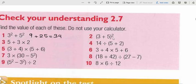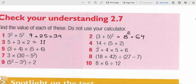Question 2: we have brackets, so BIDMAS says brackets come first. We add 3 plus 5 to get 8, and the power stays, so it becomes 8² which is 64. Question 3: multiplication before addition — 3 times 2 is 6, then 6 plus 5 equals 11. Question 4: brackets before division — 5 plus 2 is 7, then 14 divided by 7 equals 2.